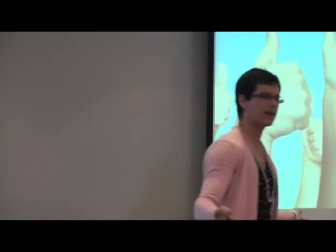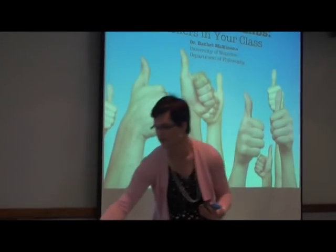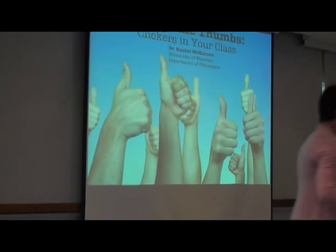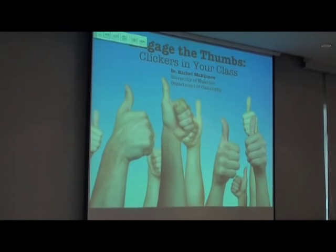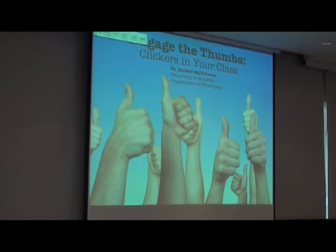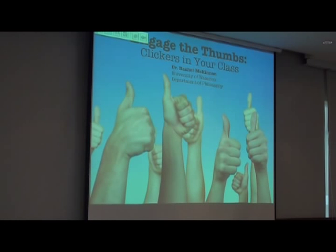On your tables right now, you each have a clicker. I'd like you to all just press the on button and a light should come on. Then hold down the on-off button until it starts blinking. Once it starts blinking, press B twice and then the light should go green.